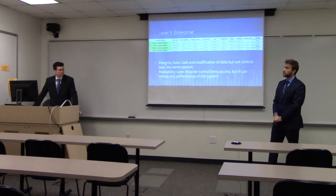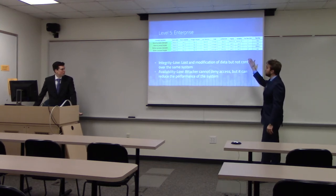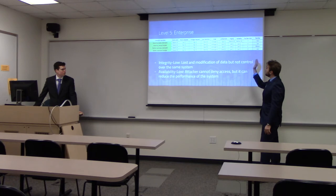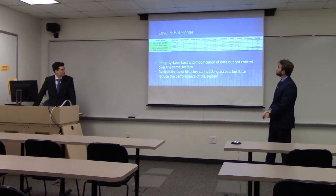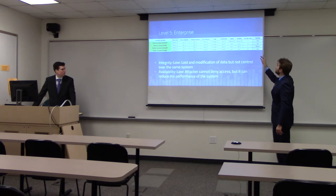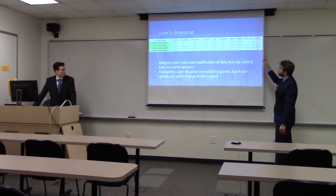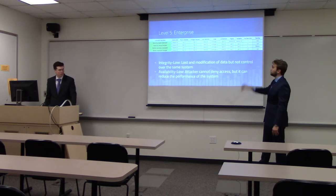This is level five, the enterprise level. Integrity is now low for some data streams, meaning data could be modified but the attacker would not have control over the whole system as in lower levels. Availability is also now low — the attacker can no longer deny access, but can affect system performance. Notably, the unencrypted versions now have high and medium risk, while the encrypted versions have low risk, showing that encryption can actually reduce risk at this level.